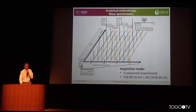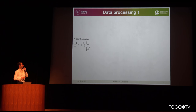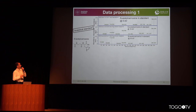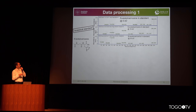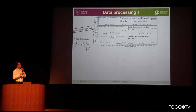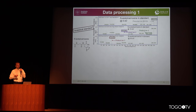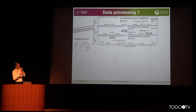Let me explain in detail how the data analysis works and how we get our identifications, using anserine/carnosine as an example. We purchase an analytical standard, and here we have the three scans. At zero electron volts we have our precursor ion — the molecule singly charged. Then at 10 and 30 electron volts we have three product ion fragments of this molecule.